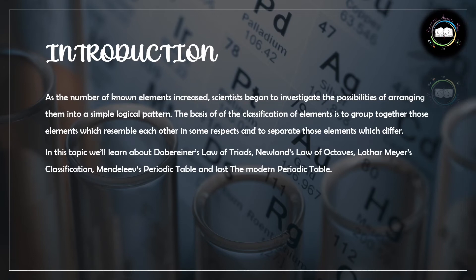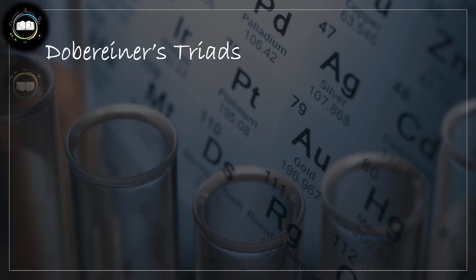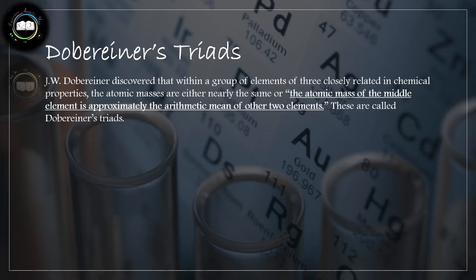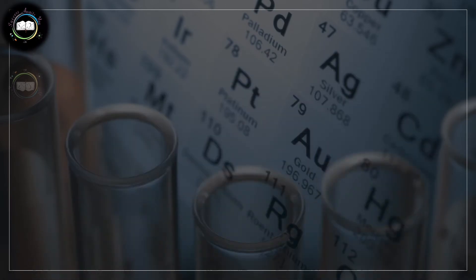We will talk about the scientists who helped in making the periodic table, such as Dobereiner with his triads, Newland's law of octaves, Lothar Meyer's classification, then Mendeleev's periodic law and periodic table, and finally the modern periodic law. In 1829, Johann Wolfgang Dobereiner, a German chemist, discovered that within a group of three elements which resemble each other chemically, the atomic mass of the middle element is approximately the arithmetic mean of the other two. For example, the atomic mass of lithium is 7 and the mass of potassium is 39; the arithmetic mean is 23, which is the atomic mass of sodium.